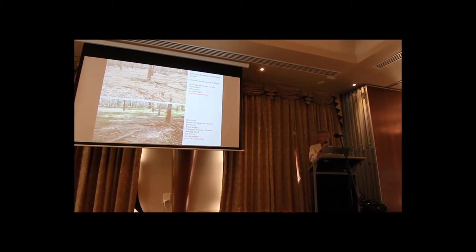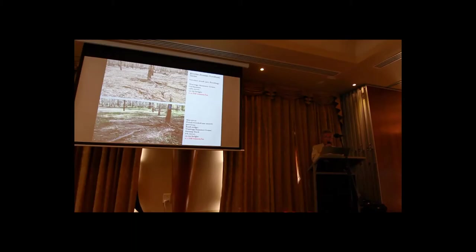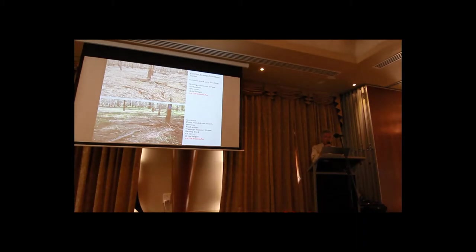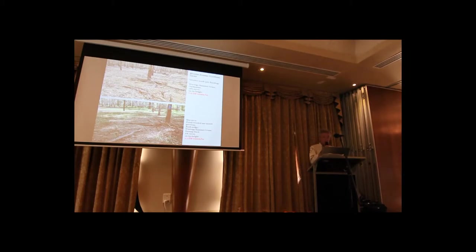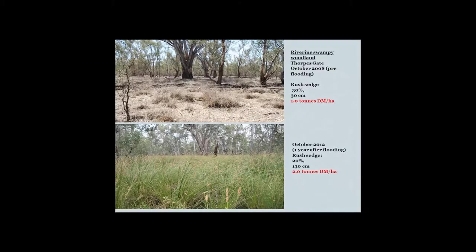As you go up the profile slightly, this is a site at Tarma. The top photo, October 2008 pre-flooding, has 0.2 tonnes per hectare of dry matter — a combination of Warrego summer grass and cartermine, basically dry biomass with little growing. May 2012, one month after the flood has receded, the vegetation has responded a lot quicker, with a combination of rush, sedge, Warrego summer grass and swamp dock germinating — 6% cover, 15 centimetres of height — producing 0.1 tonnes per hectare of dry matter.